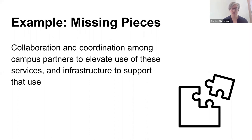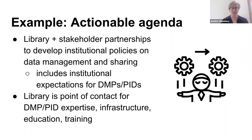In trying to identify the missing pieces, everything pointed to two main things: more collaboration and more coordination among various campus partners. The main goal of that collaboration and coordination would be to elevate use of the existing services and also the infrastructure that would be used to support that use. The next step was to identify an actionable agenda. Using the library as an example, we identified that library and stakeholder partnerships are essential to develop institutional policies on data management and sharing — this extends to include institutional expectations for DMPs and PIDs. More visibility around what is expected at the institutional policy level will help greater adoption for both PIDs and DMPs. And then to help identify the library as the primary point of contact for DMP and PID expertise, infrastructure, education, and training.